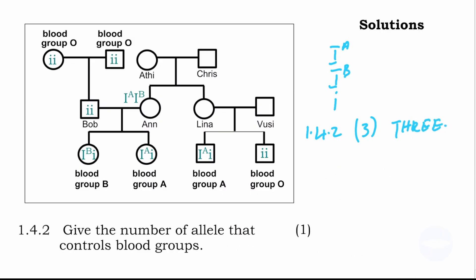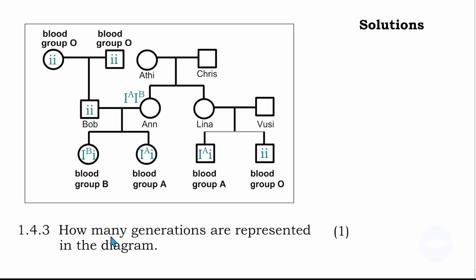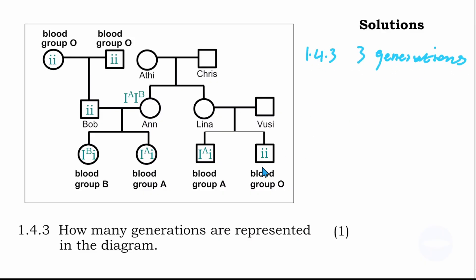The next question asks: how many generations are represented in the diagram? To find the generations, you draw a horizontal line across each group of individuals on the same level. Here we have this generation, then this generation, and then this generation. Therefore, there are 3 generations.